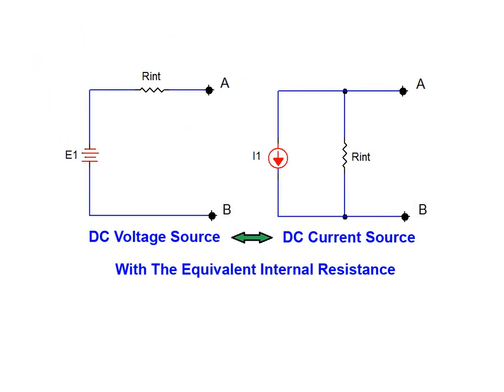As has been shown in these simple examples, source conversion is quite easy. It's a great tool when you're using DC linear network theorems for circuit reduction purposes.